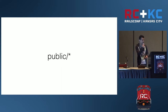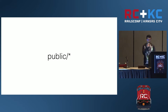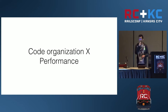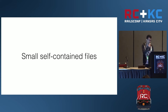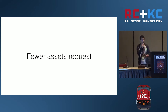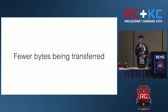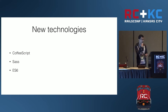Rails is about convention over configuration, and that's what we wanted to do with our client-side code. We also had another problem: we had to make trade-offs between code organization and performance because browsers had limitations and the internet was slow. We had to decide: should we create small self-contained files or make fewer asset requests? Should we write legible code or transmit fewer bytes to the client?